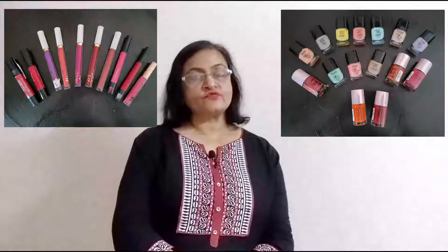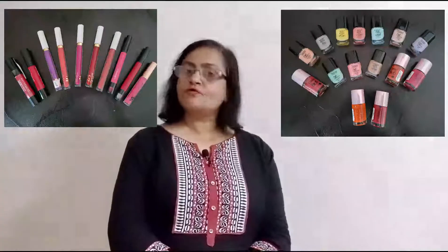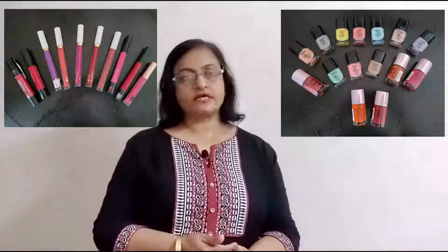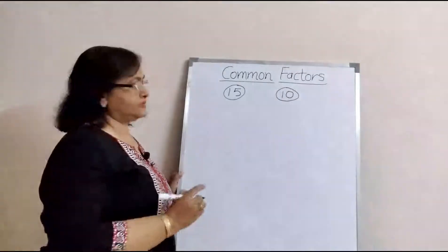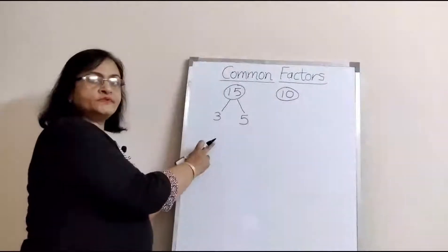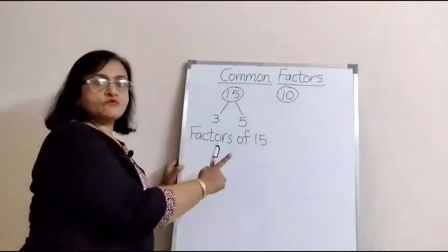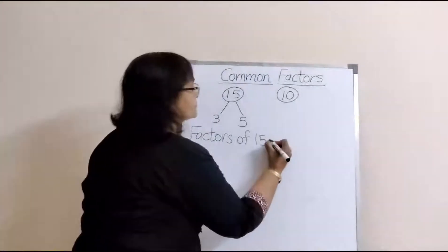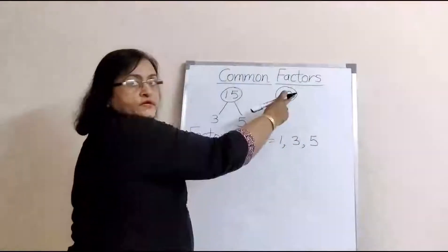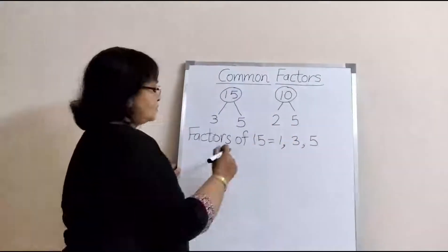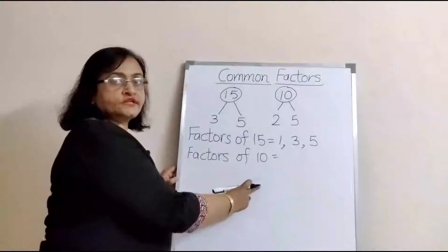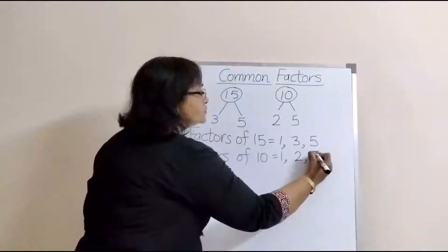For this, we will have to find the common factors of 15 and 10. First, factors of 15: 1, 3, and 5. Now let's find the factors of 10: 1, 2, and 5.